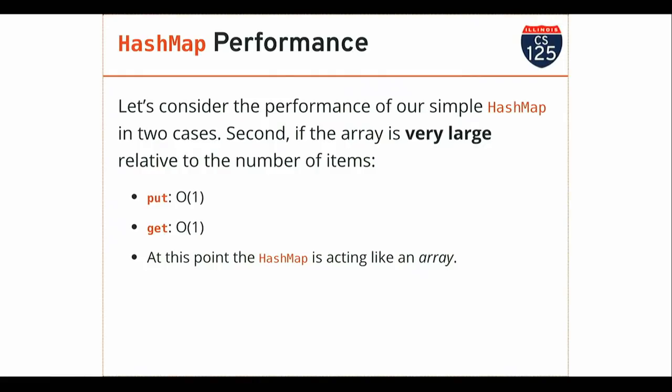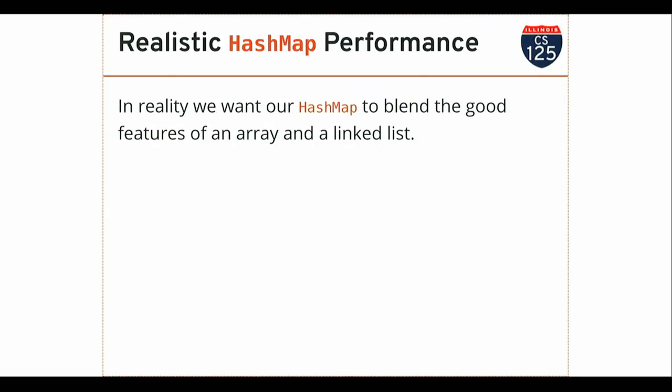Essentially, if I make my array big enough, what this starts to act like is an array — I get constant time put and get. This seems like the winner, but what's the trade-off? If I make the array really big, it takes up a lot of space. The array itself is using a lot of memory and most of it's empty, because most of the buckets are empty — they don't have any values in them.